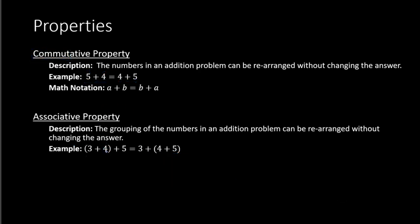In math notation, we can replace these numbers with the letters A, B, and C. Here we see the parentheses around A plus B, and the plus C on the outside. That's equal to A plus, and the parentheses over here around the B and the C. So that is, in math notation, how we write the associative property.